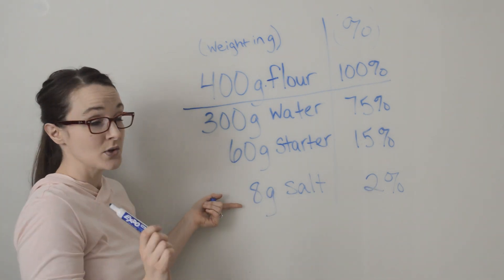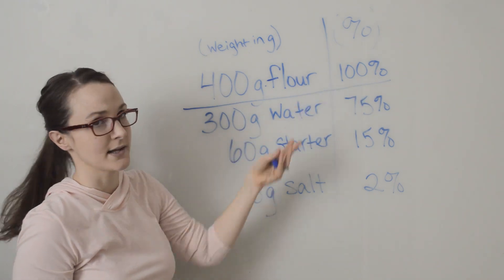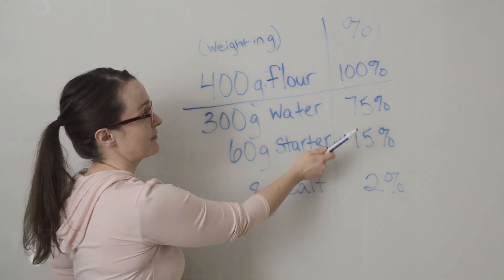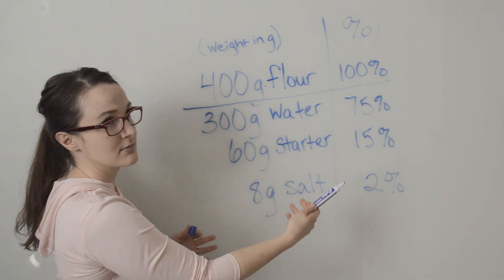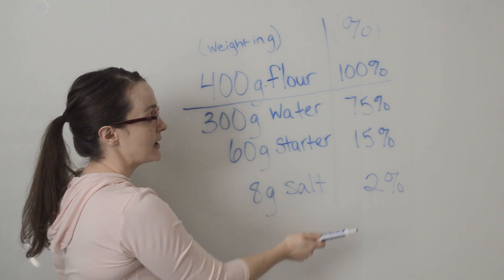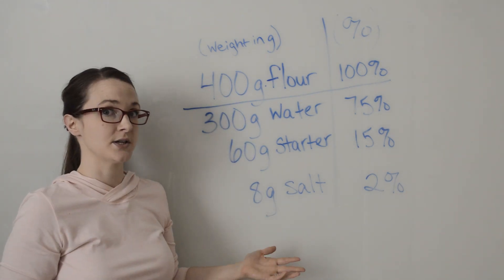So now I know that my loaf—and your flour is always going to be 100%, that's just a given—I know that my loaf is going to be 75% hydration, which is our term for how much water is in there, 15% starter, and 2% salt.